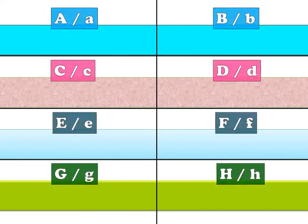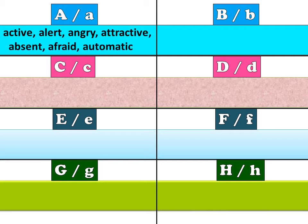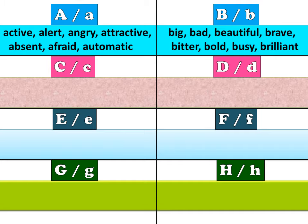Now let's see A to Z adjectives. Starting with A: active, alert, angry, attractive, absent, afraid, automatic. These are adjectives starting with A. B: big, bad, beautiful, brave, bitter, bold, busy, brilliant.